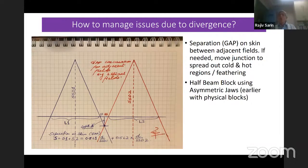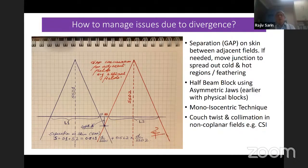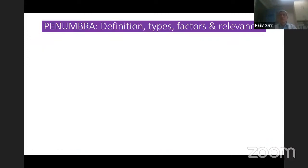Half beam block — earlier we used physical blocks like the breast cone, which was a half beam block to reduce divergence into the lung; these days we use asymmetric jaws. Mono-isocentric technique can be used for non-coplanar fields or even coplanar fields. A couch twist of four or five degrees can make the superior border non-divergent, useful for craniospinal irradiation or breast and chest wall with supraclavicular fields. Increasing the SSD also reduces divergence.